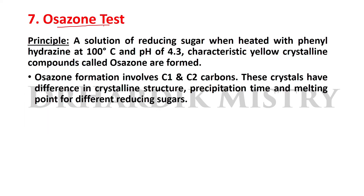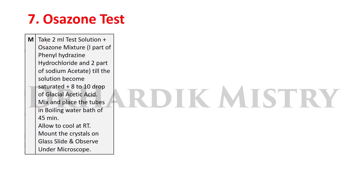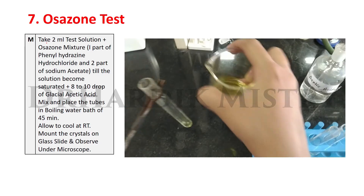Osazone Test. Principle: A solution of reducing sugar when heated with phenyl hydrazine at 100°C and pH of 4.3, characteristic yellow crystalline compounds called osazones are formed. Osazone formation involves C1 and C2 carbons. These crystals have differences in crystalline structure, precipitation time, and melting point for different reducing sugars. That is the principle of osazone test.